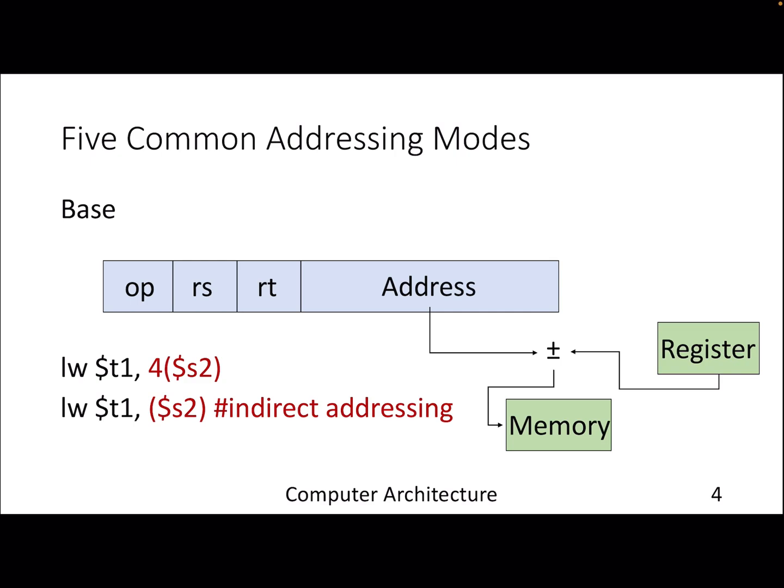We are taking the content of a register, for example register s2, and then we are also taking the constant or address which is provided by the instruction itself. Depending on where exactly it's jumping, you do a plus or minus. So if you have a minus four here, you go for minus here, and then finally that will give you the address.